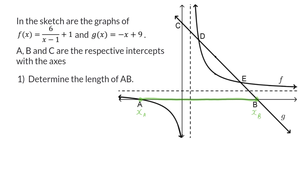B to be able to determine the distance between. A and B are the x-intercepts of these two graphs, so we now need to go and determine those coordinates.